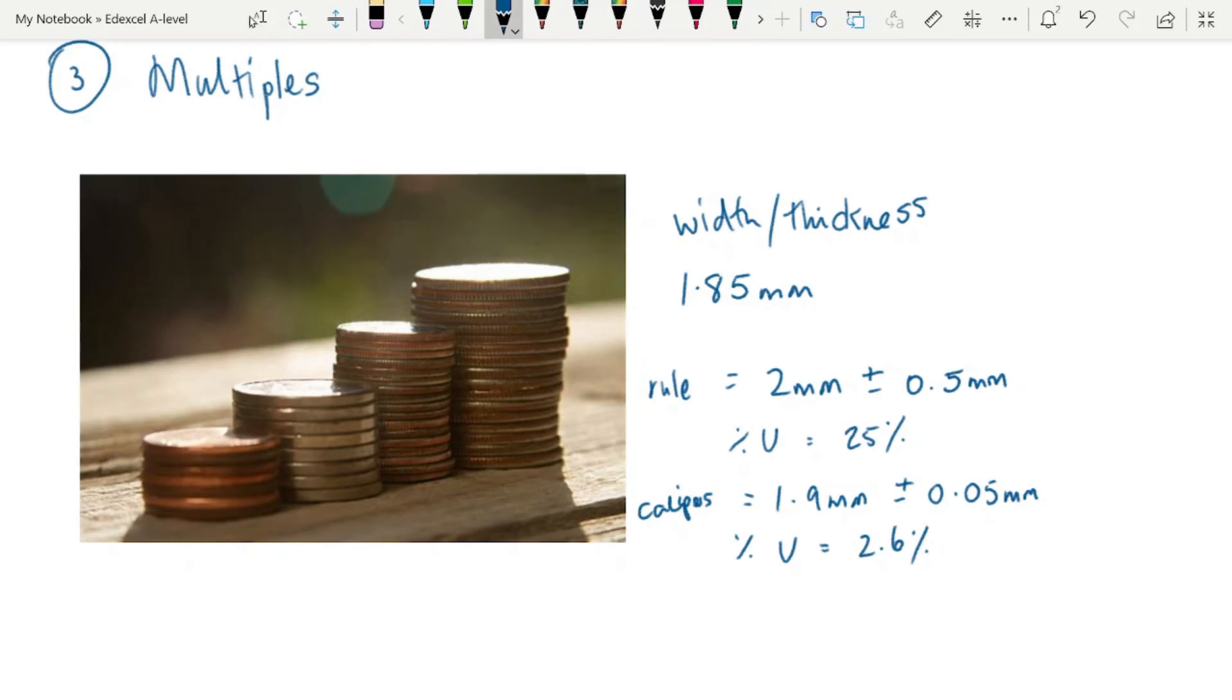Option 3 is our micrometer, and that would give us the reading of 1.85 millimeters, because it can measure to 100 millimeters, and our uncertainty would be half that smaller scale division.